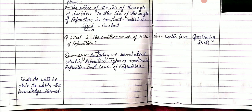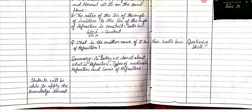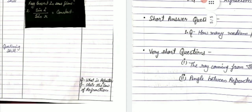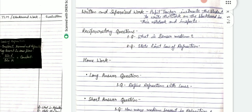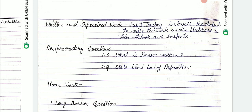Summary: today we learned about what is refraction, types of medium in refraction, and laws of refraction. Expected behavioral change: students will be able to apply the knowledge learned. Finally we do some questions — what is refraction? Students answer. Second: state the law of refraction. After presentation we note written and supervised work — the pupil-teacher instructs students to write the work from the blackboard into their notebooks.